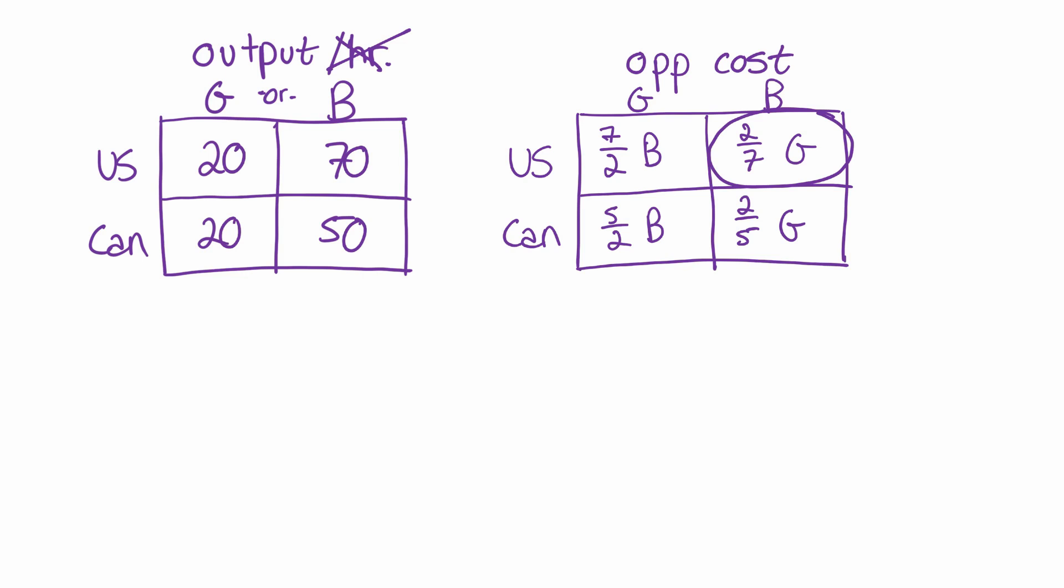And conversely, Canada has the comparative advantage in guns because its opportunity cost of producing guns is lower. Five over two is two and a half, which is less than seven over two, which is three and a half.